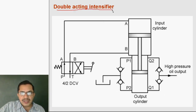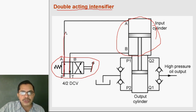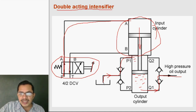This is the double acting intensifier. To operate it, we use a 4 by 2 direction control valve. When the lever is in the first position, P to A and B to T connection is made. Oil flows to port A, the head end port of the input cylinder, and the piston moves in the downward direction. Oil below the piston in the intensifier flows out, and oil from the reservoir flows into the top port P1 of the small cylinder. During this downward stroke, on one side there is suction of oil into the small cylinder and on the other side there is delivery of oil from the small cylinder.